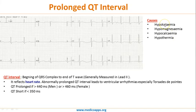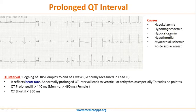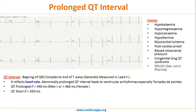The main causes of prolonged QT are electrolyte abnormalities: hypokalemia, hypomagnesemia, and hypocalcemia, plus hypothermia. Others include myocardial ischemia, post-cardiac arrest, raised intracranial pressure, congenital long QT syndrome, and a large list of drugs that can prolong the QT interval.